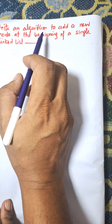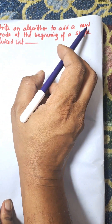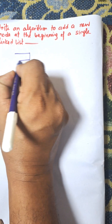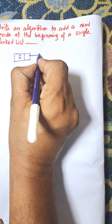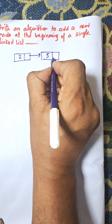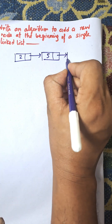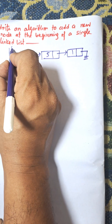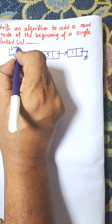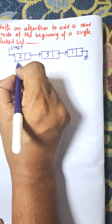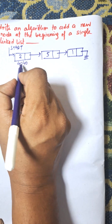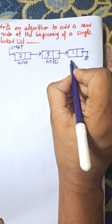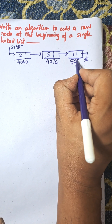I am going to write the algorithm for addition of a new node at the beginning of the single linked list. Suppose this is the single linked list with values 2, 5, and 1, followed by null. This is the starting pointer that points to the starting address of the linked list. Suppose the address of the first node is 4040, the next one is 4070, and the next is 4090.